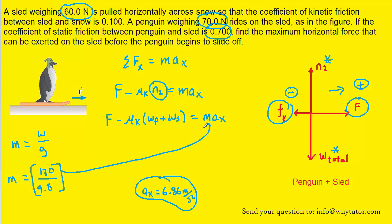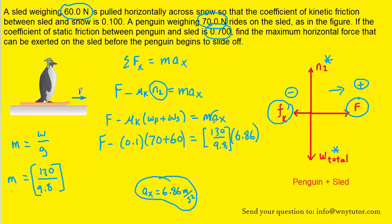Now everything can be plugged in and we can solve for F. For the acceleration, we use the value calculated earlier — 6.86 m/s² — because the penguin and sled are accelerating together at that same value. Using simple algebra, F turns out to be exactly 104 newtons. If you have any questions about that algebra, please let me know.